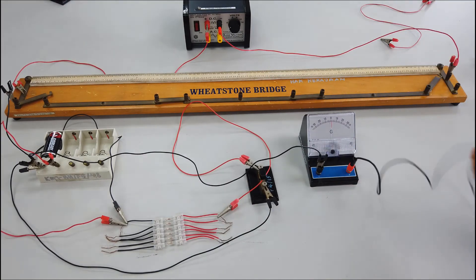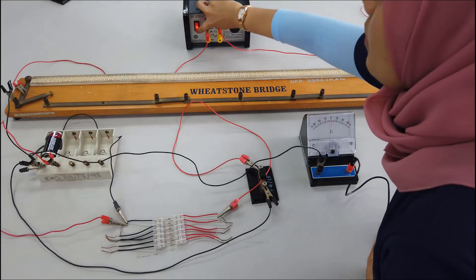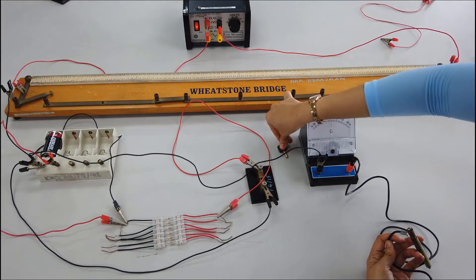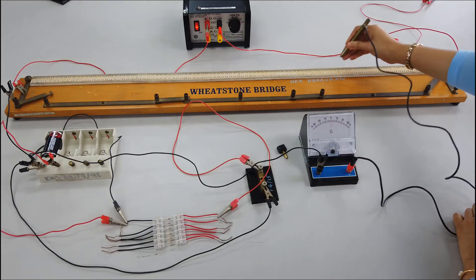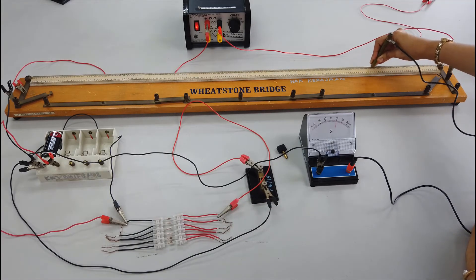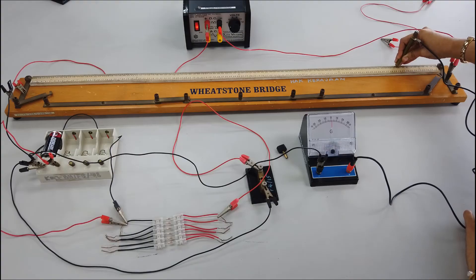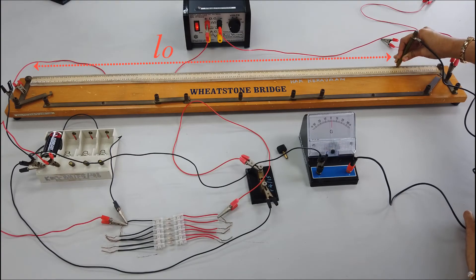Now let's determine L0. Switch S1 closed and switch S2 open. Slide the jockey along the wire until the pointer of the galvanometer is at 0. This is L0.